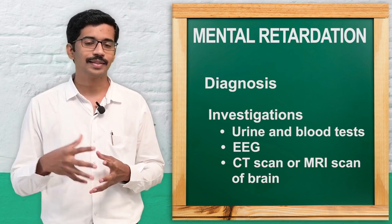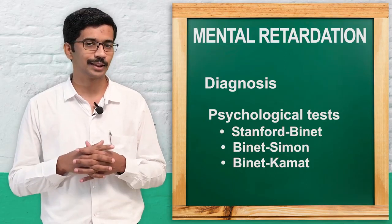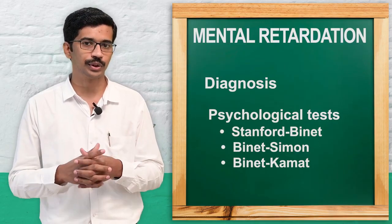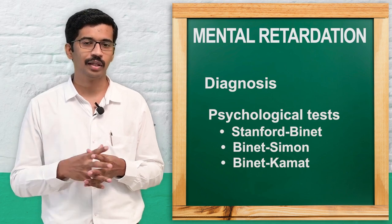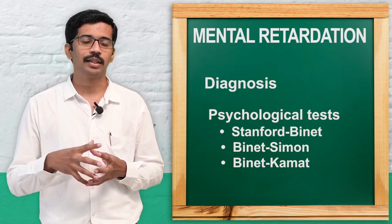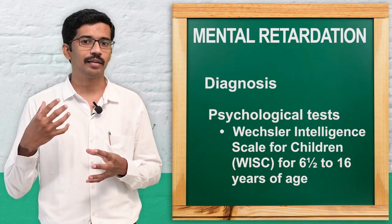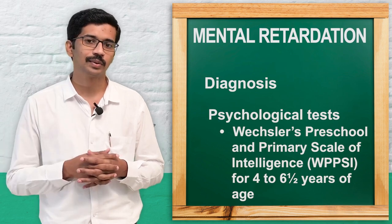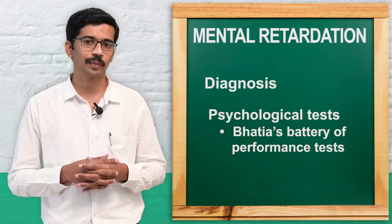MRI and CT scan are also part of the evaluation. Apart from these, the main assessment is the psychological assessment test, through which we can find out the intelligence quotient or IQ of the patient. There are many tests available — such as the Binet intelligence test and battery tests — for adult intelligence as well as children's intelligence, and we perform these psychological assessment tests on the person.